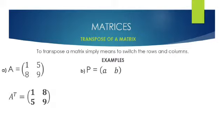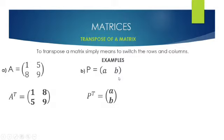Let's look at another example, B, where we're given a row matrix. If we're asked to transpose this matrix B, we would have the answer which will become a column matrix.